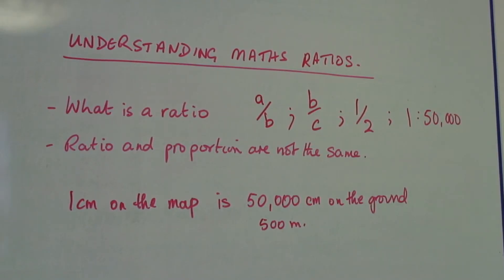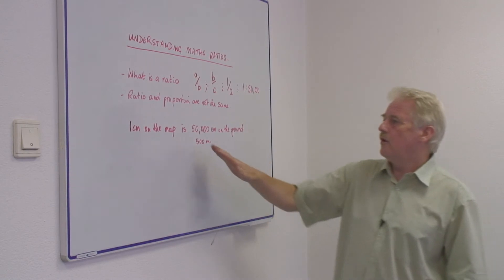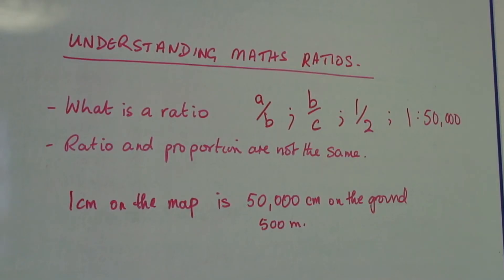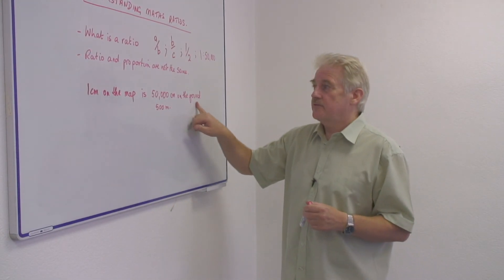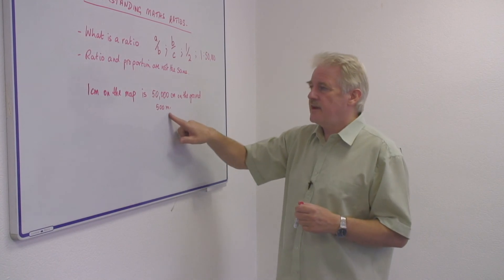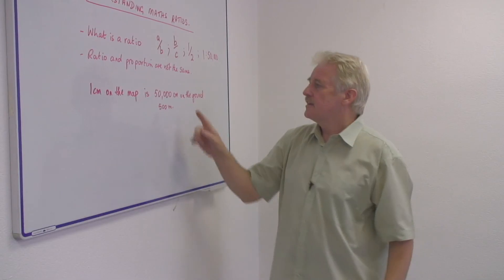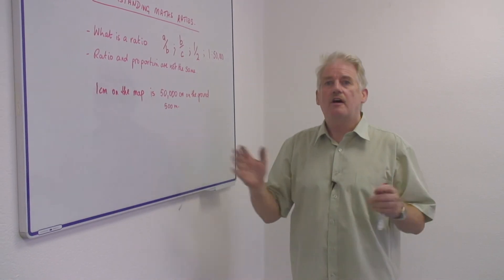So that gives us a proportion for the size on the ground to the size on the map. So 1 centimeter on the map is 50,000 centimeters on the ground. And 50,000 centimeters is 500 meters. So 1 centimeter on the map that you're looking at is just 500 meters on the ground.